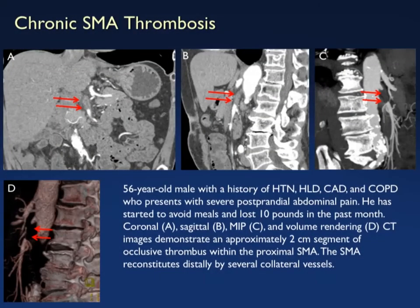Here are a couple of examples of chronic SMA thrombosis, very nicely shown from coronal to sagittal to MIP and volume rendering. You can see occlusion of about two centimeters of the proximal SMA.